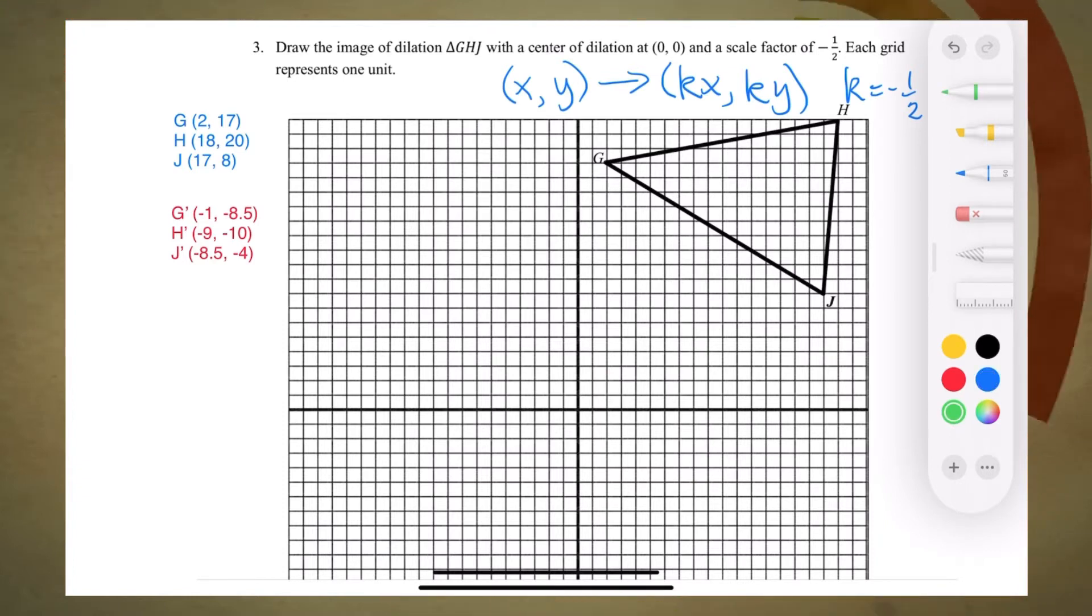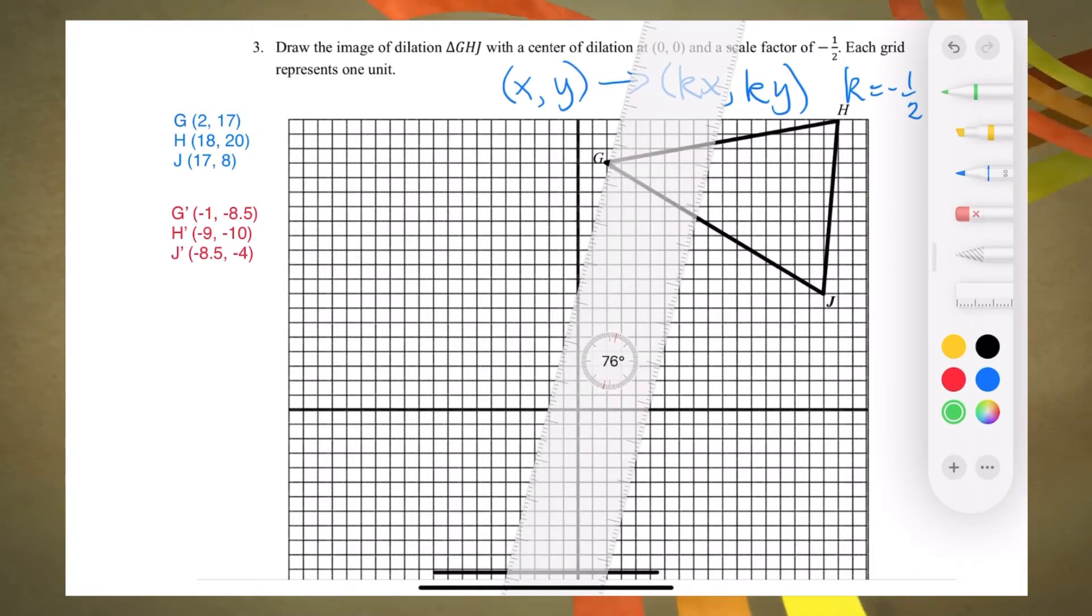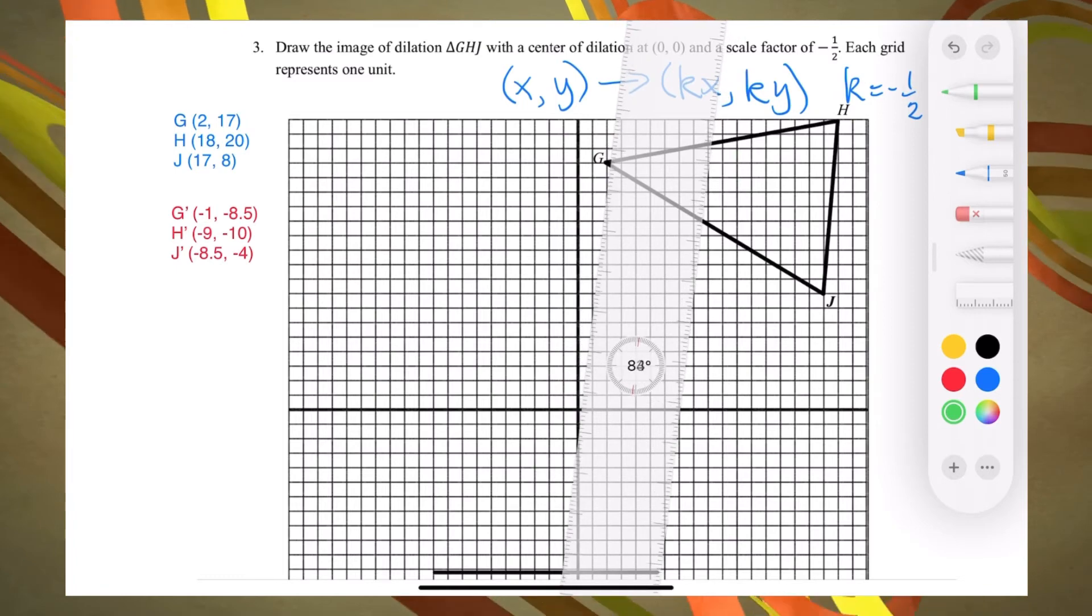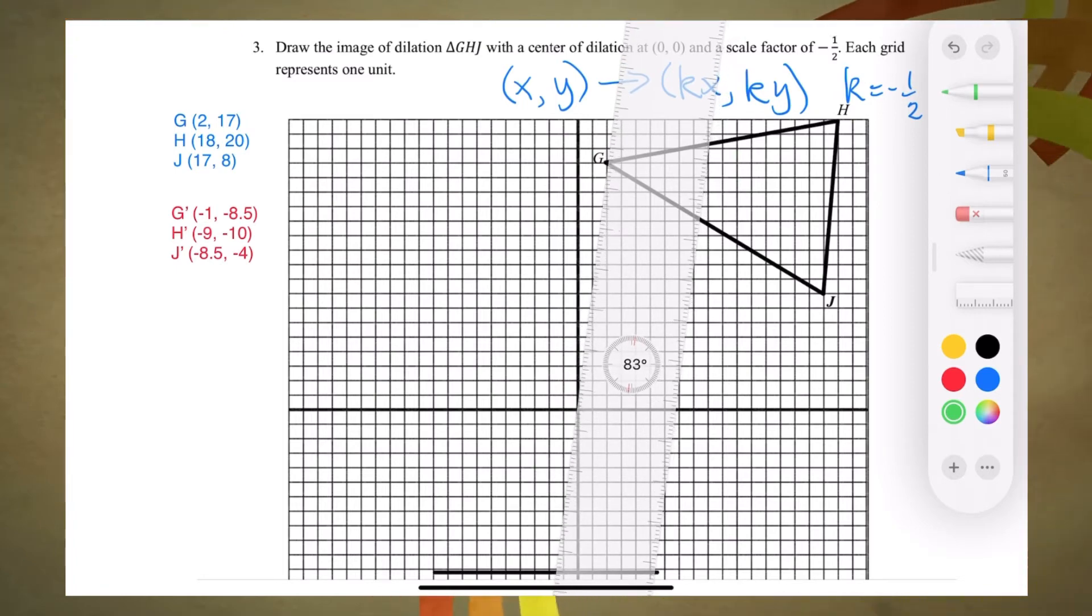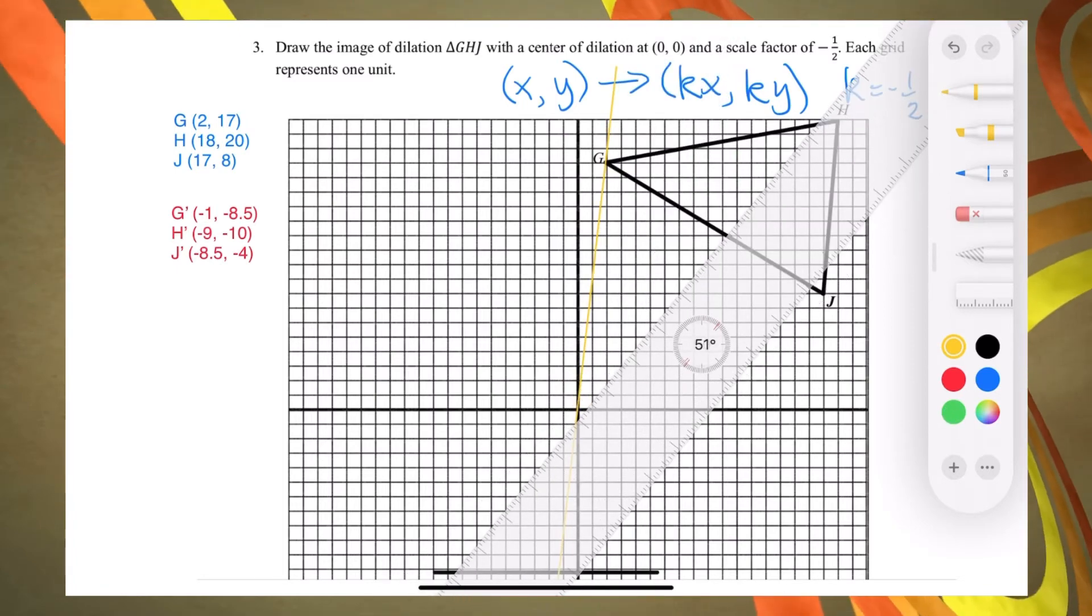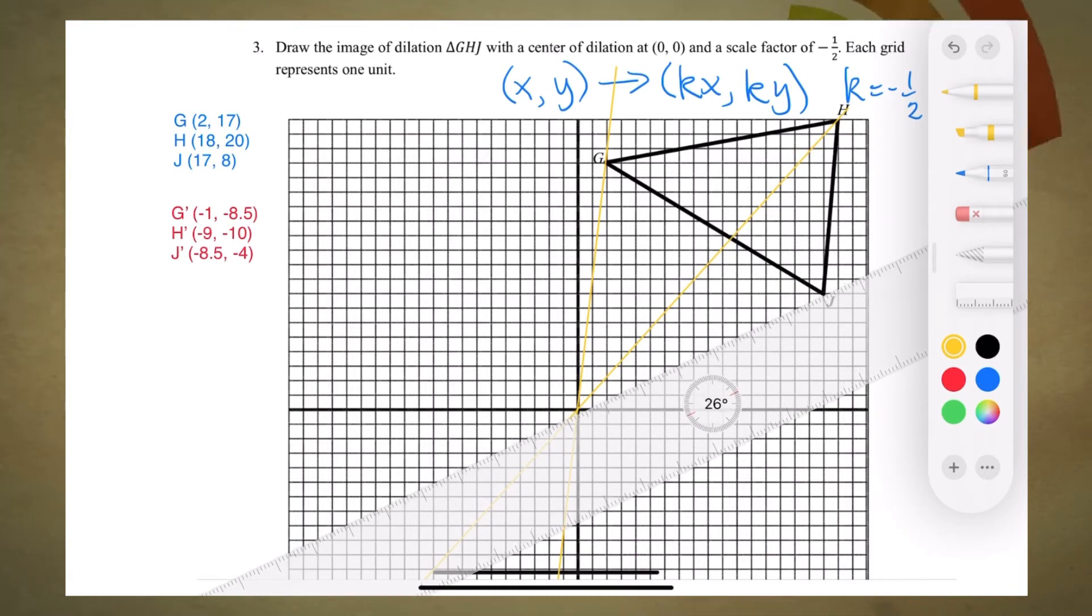Let's connect each vertex of triangle GHJ to the center of dilation. Using my straight edge, I'm going to connect G and 0,0, H and 0,0, vertex J and 0,0.